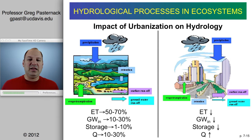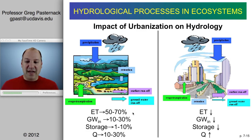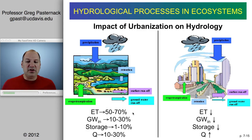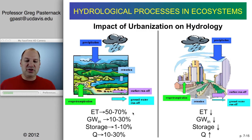The first impact is the hydrological cycle itself. In a natural setting, evapotranspiration accounts for about 50% to 70% of the rain that falls. Groundwater recharge is 10% to 30%, surface storage is 1% to 10%, and the rest — 10% to 30% — runs off as discharge Q past the watershed outlet.